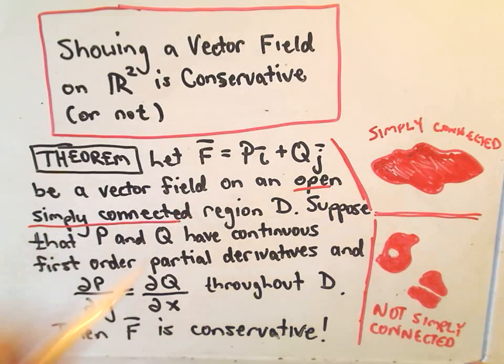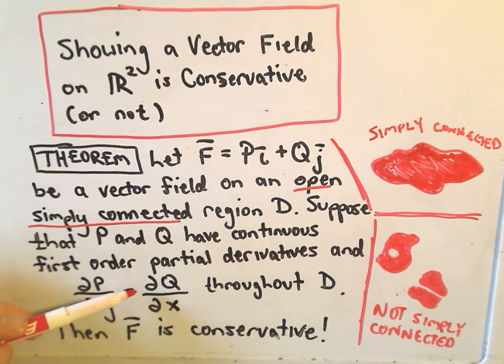Simply connected here in just a second. It says suppose it's an open, simply connected region D, and suppose that P and Q have continuous first order partial derivatives. It says if the partial of P with respect to Y equals the partial of Q with respect to X throughout our region D, then F is in fact a conservative vector field.